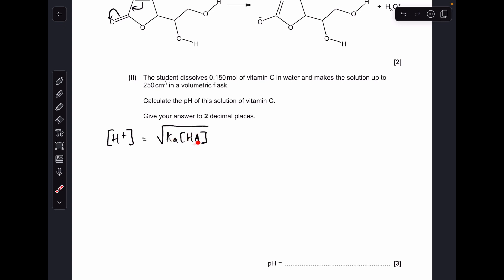We just need to calculate the concentration of the acid, and we're going to do that by moles divided by volume. Remember the volume has to be in decimeters cubed, so we're getting 0.6 moles per decimeter cubed for the concentration.